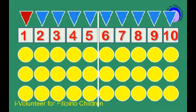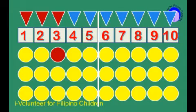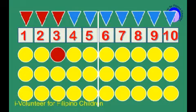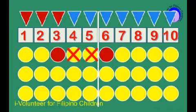Remember to skip two numbers in between. Let's start counting by threes starting from number three. Let's skip two numbers in between — let's skip four and five. What is the next number? The next number is six.